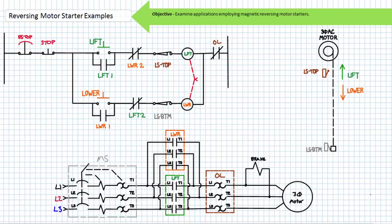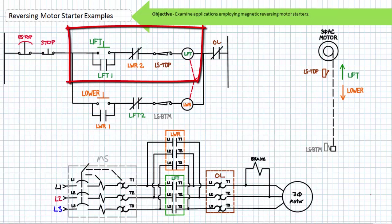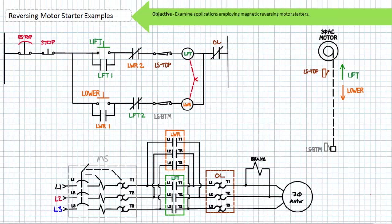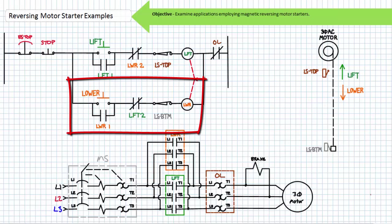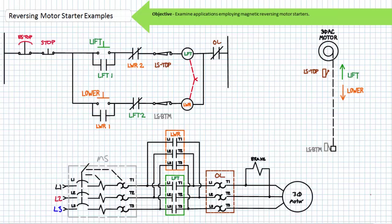The pilot schematic features an e-stop in series with a normally closed stop push button. The remainder of rung one and spilling into rung two is an electrically interlocked three-wire control circuit used to control the lift contactor, with the inclusion of a normally closed top limit switch. Rung three and spilling into rung four is an electrically interlocked three-wire control circuit used to control the lower contactor with the normally closed bottom limit switch. The mechanically and electrically interlocked lift and lower contactors prevent simultaneous closure and direct phase-to-phase contact. The normally closed overload contact in rung one protects the motor from sustained overloads in both lift and lower mode.